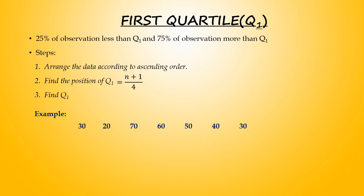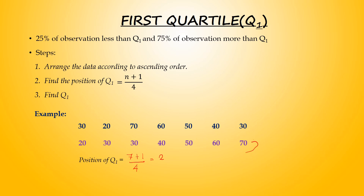Look at this example. First, arrange the data from the smallest to the highest value. Next step, find the position of Q1. N is 7, so (7+1)/4 gives you position 2. Based on the arrangement of data, the second observation is 30.